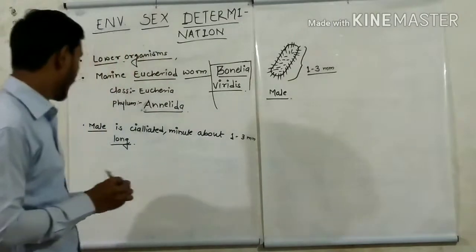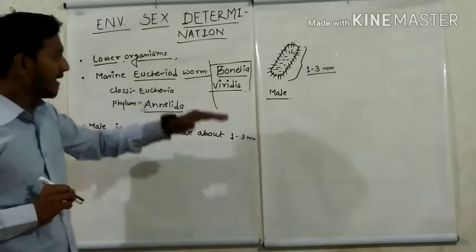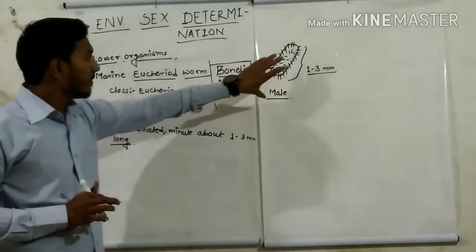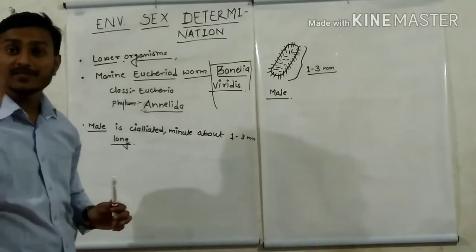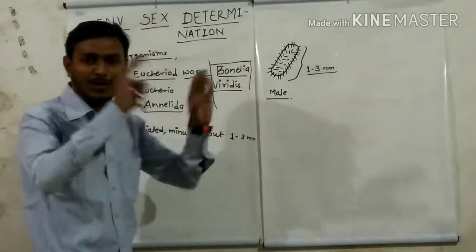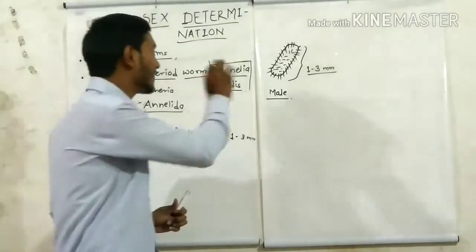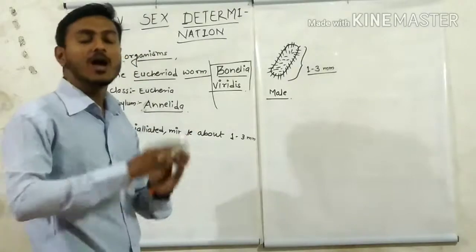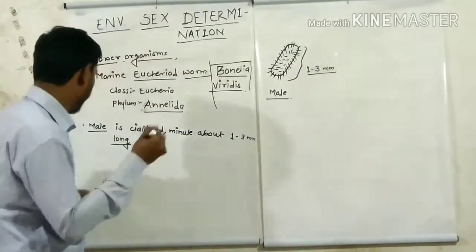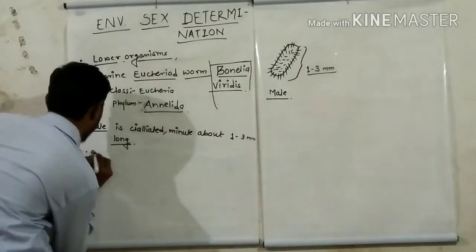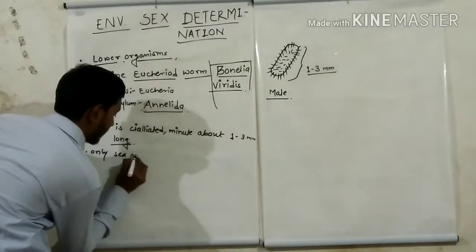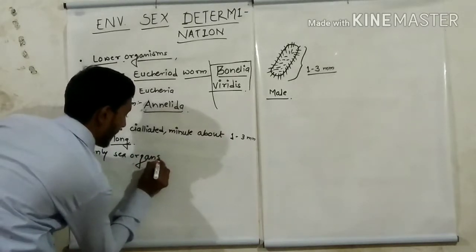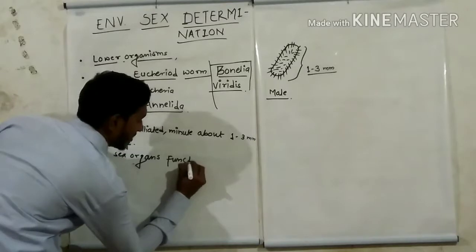In the male of the marine echiuroid worm, all the body organs are non-functional except the sex organs. All other organs of this male echiuroid worm are non-functional; only the sex organs are functional.